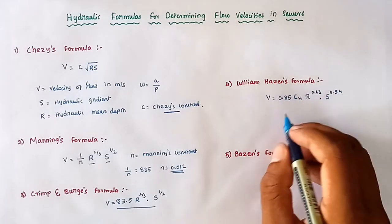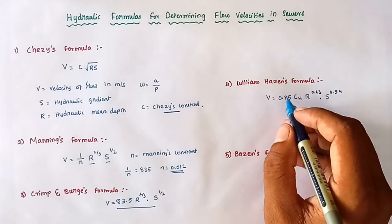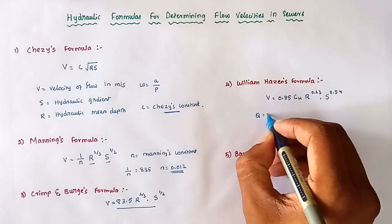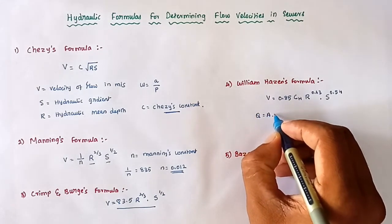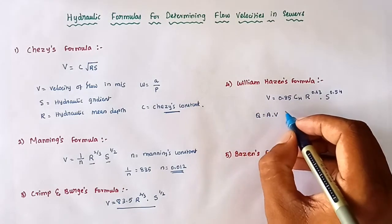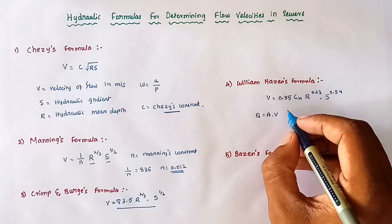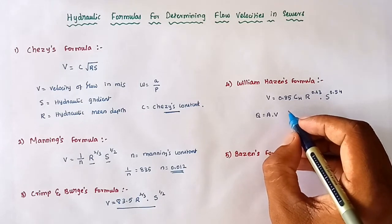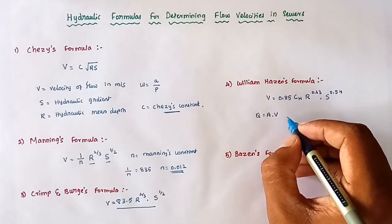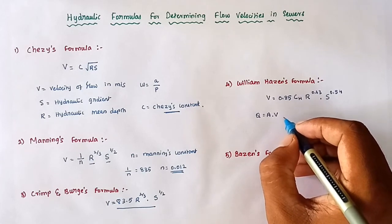The channel section can be designed by using Q = Area × Velocity, where A is the flow cross-sectional area and V is the velocity of flow in the channel.